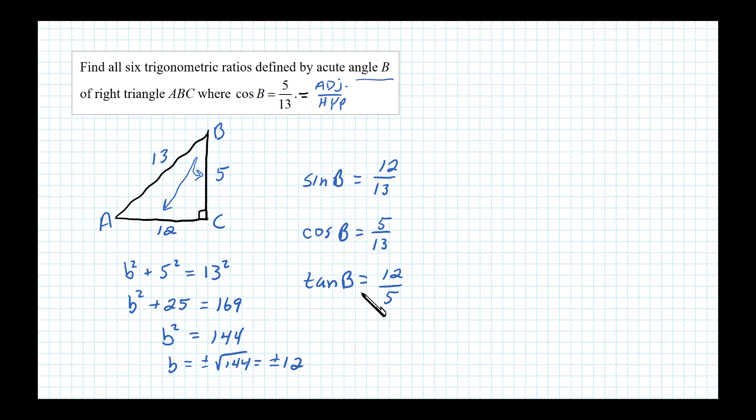Now the other three trigonometric ratios are the reciprocals. The reciprocal of tangent is cotangent, so cotangent of B is 5/12. Secant is the reciprocal of cosine, so secant in this case is 13/5. And cosecant is the reciprocal of sine, so in this case 13/12. And there's the six trigonometric ratios for this given problem.